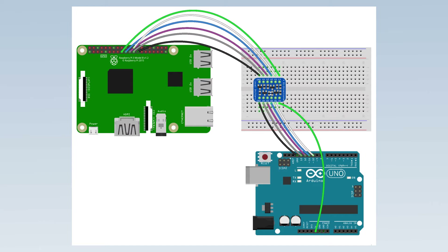I've used the Adafruit four-channel bidirectional logic level converter, which can safely convert voltage between 3.3 volts and 5 volts. Although it's designed for I²C, it can be used for SPI up to 2 megahertz. An alternative is to run the Arduino's ATmega328P processor at a lower voltage — on the Freeduino I've used for the demonstration it has an option to switch to 3.3 volts.